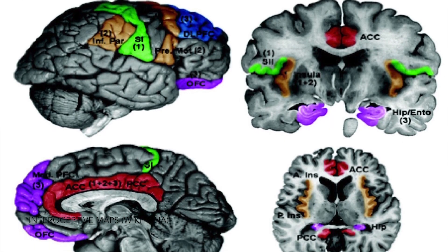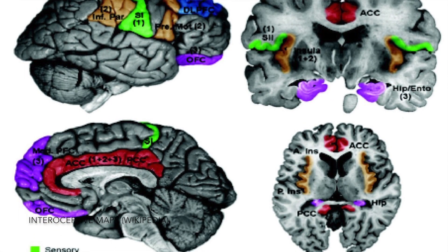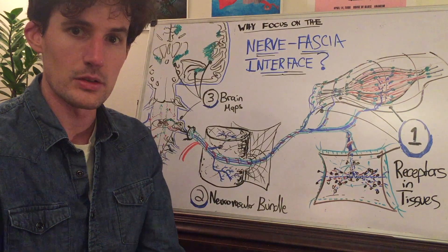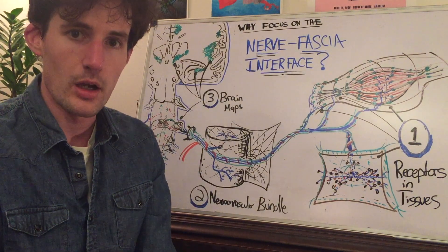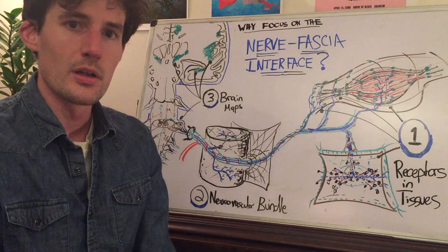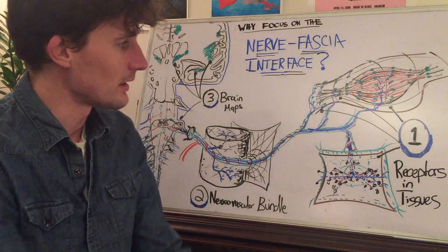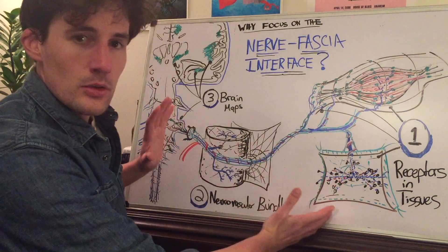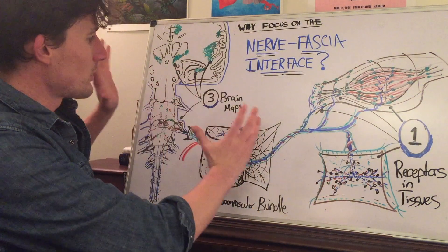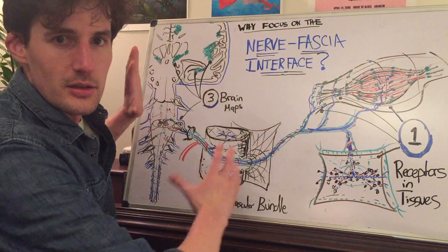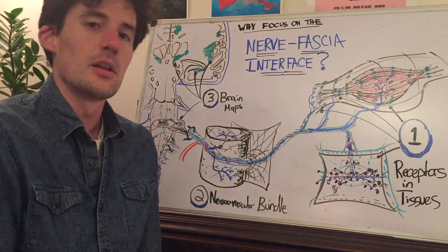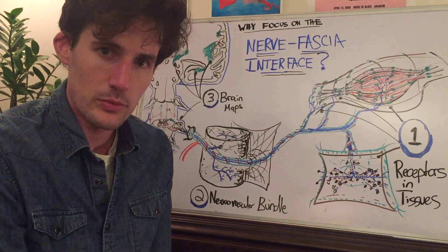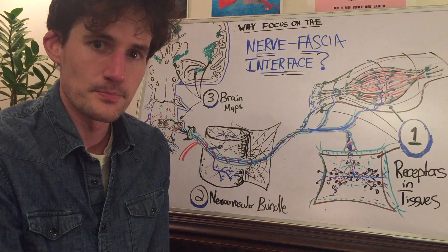All of these things and more are functions of the brain maps. And if what you want to do is produce behavior change in the system over time, sooner or later you've got to talk to the brain. So the nerve-fascia interface is happening at the terminal receptor, at the neurovascular bundle, and in the representation by the brain of space. Those three pictures are in my mind when I'm working, and it might be useful to have them in yours as well. Thanks for your time.